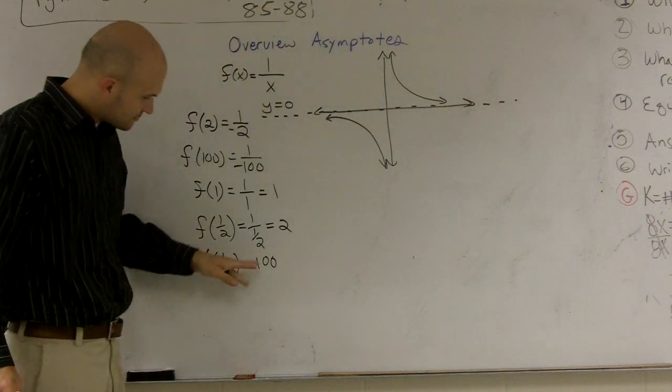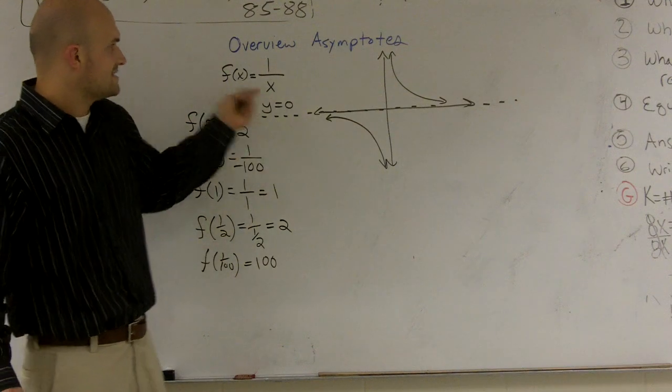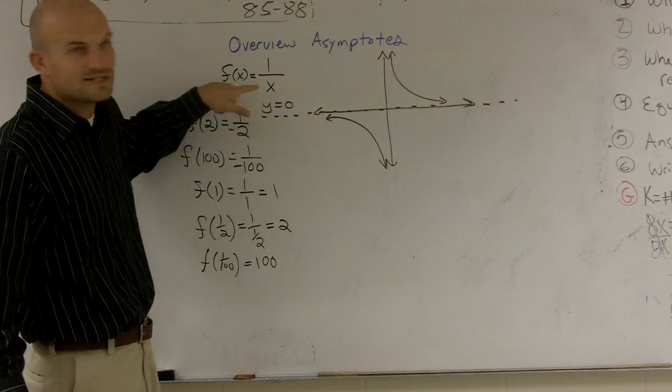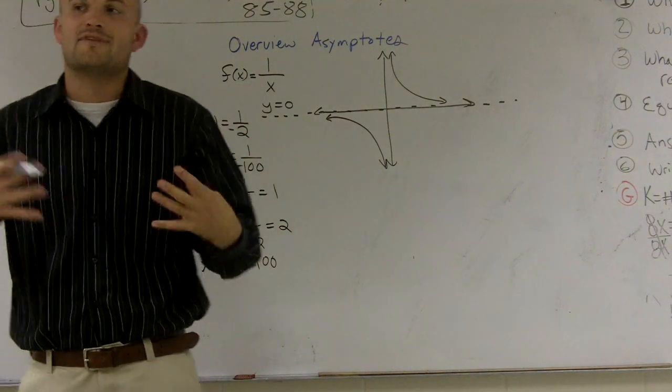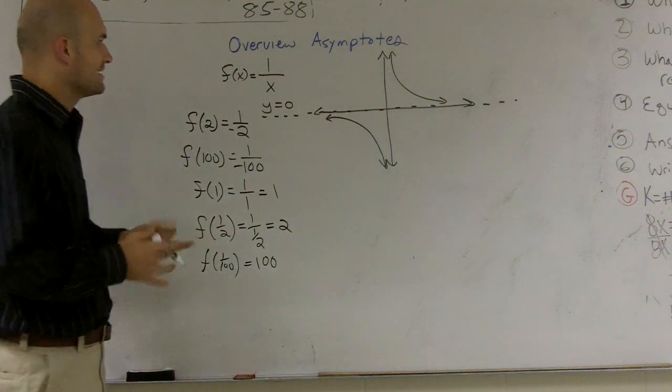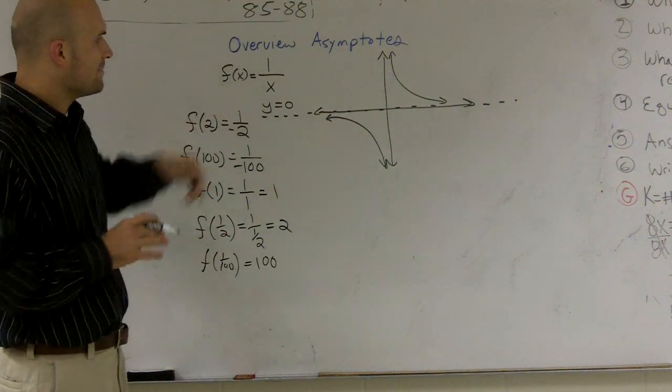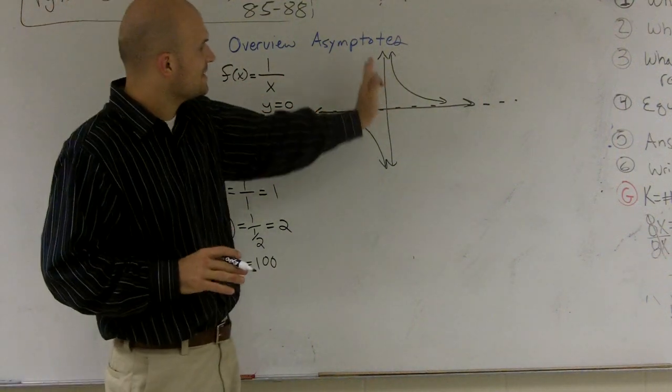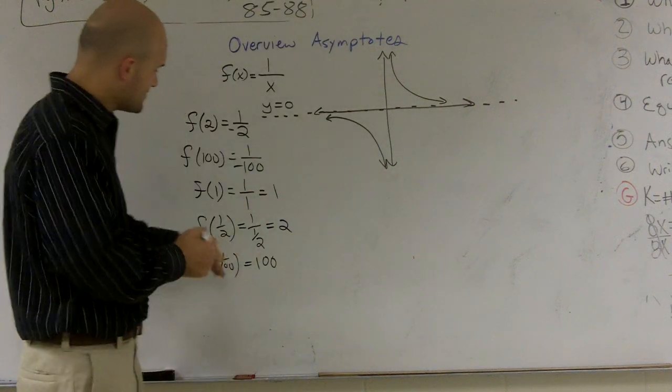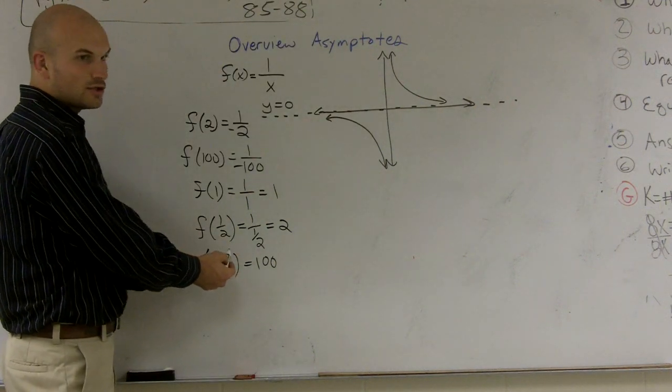But what you notice is we can't get to 0, can we? We can't put a 0 in there, because any number divided by 0 is going to be undefined. So what happens is this line just keeps on getting larger and larger and larger as we keep on getting closer and closer and closer to 0.